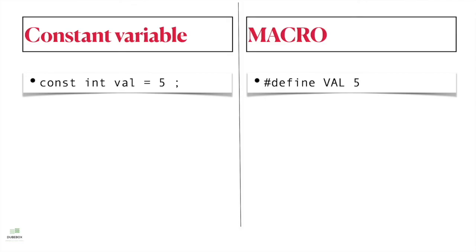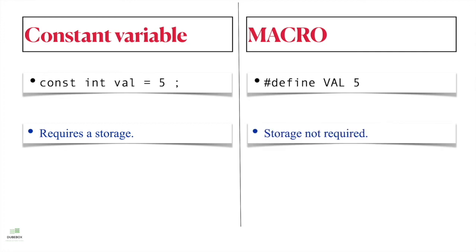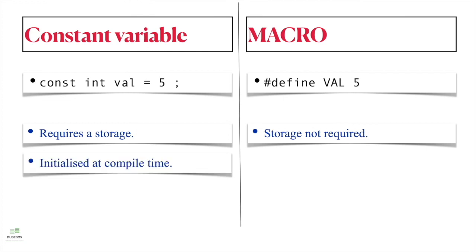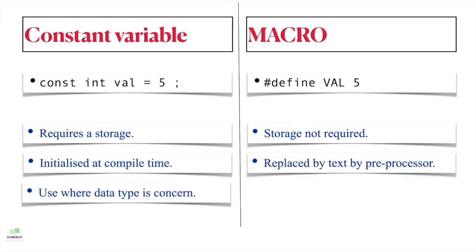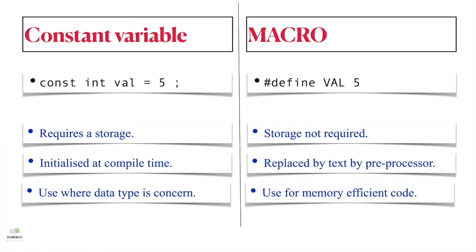Now we will see the difference between using const keyword and macro. A constant variable requires storage, as it is a variable, while a macro does not require any. Constant variables are initialized at compile time; macros are replaced with text during pre-processing. A constant variable can be used where data type is a concern; macros can be used for memory-efficient code.